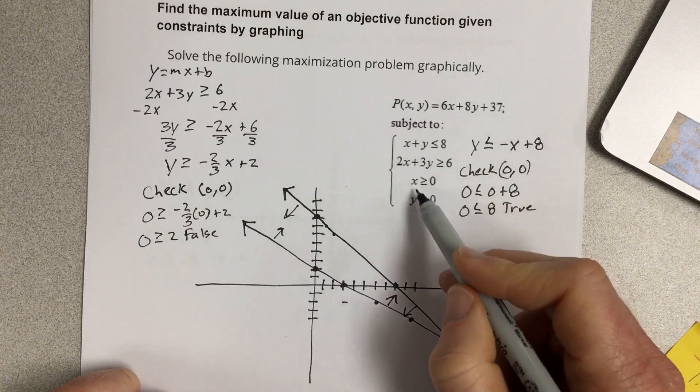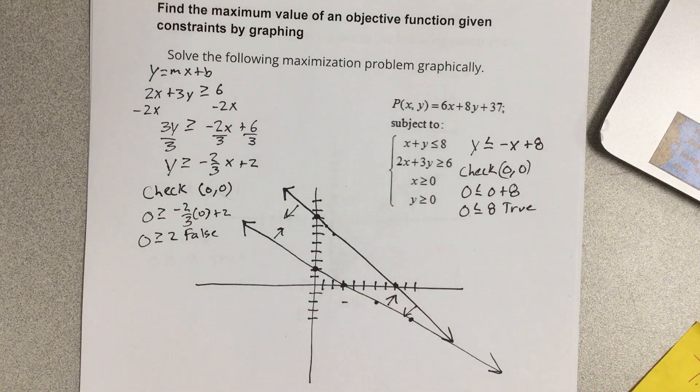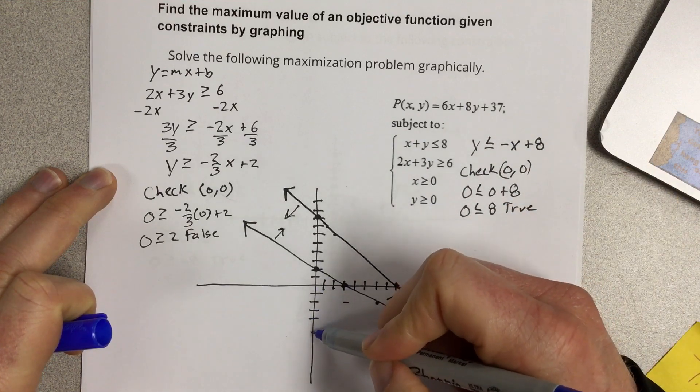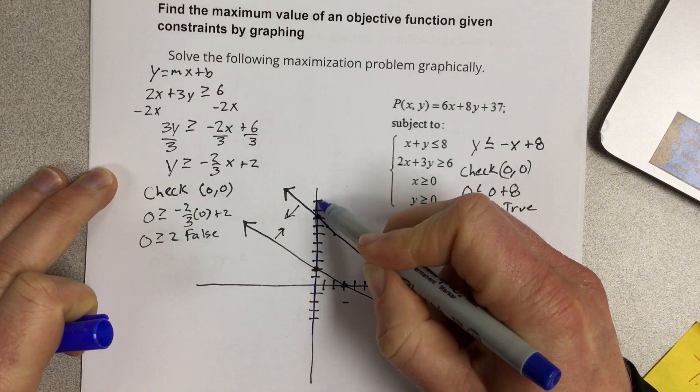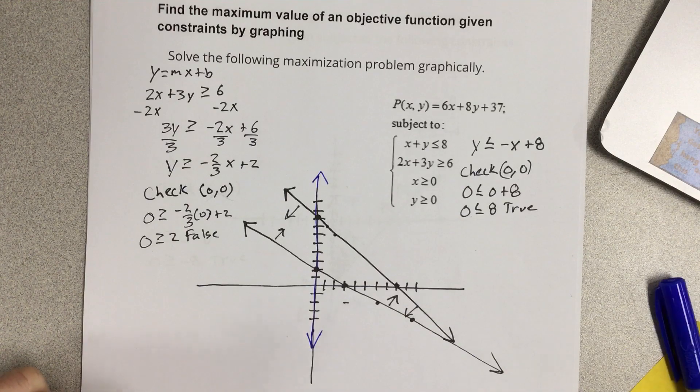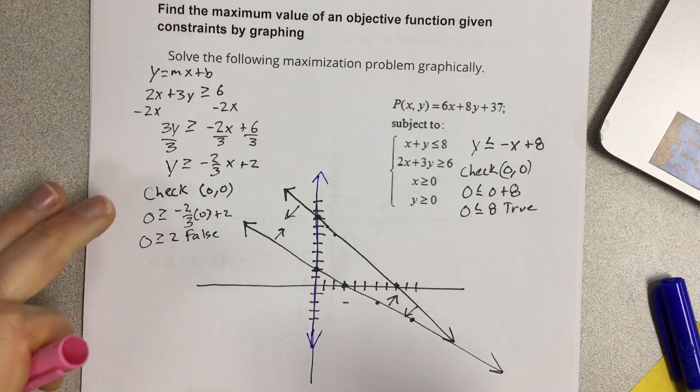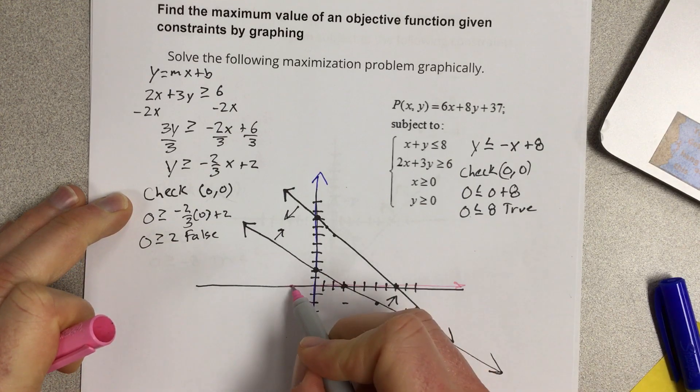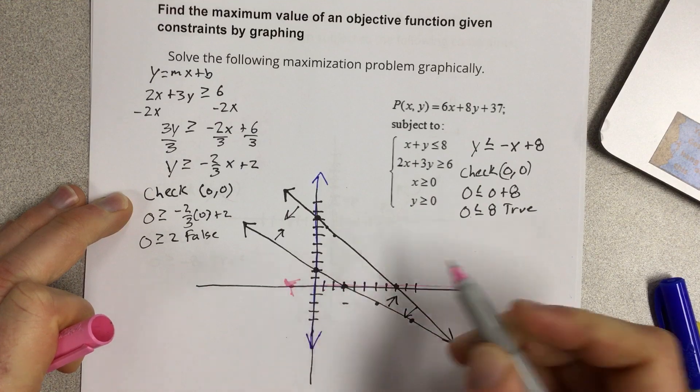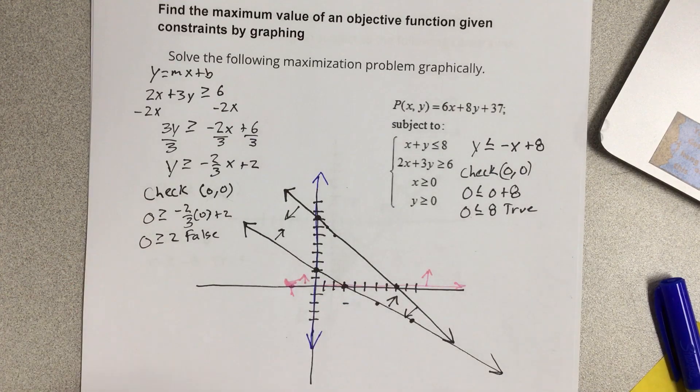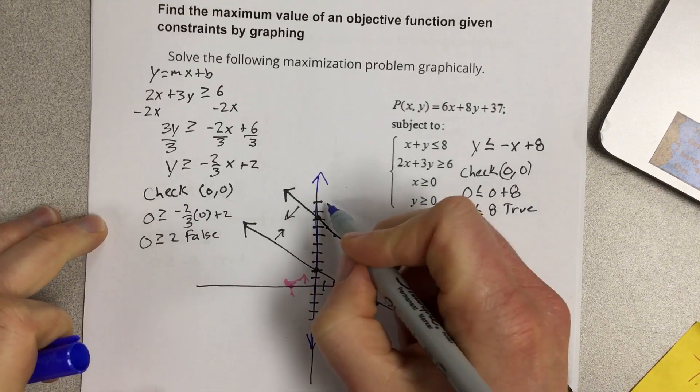Now we're going to graph x greater than or equal to 0 and y greater than or equal to 0. I'm going to do those in a little different color. So we've got x greater than or equal to 0 vertical line here, and y greater than or equal to 0. We've got this horizontal line here.